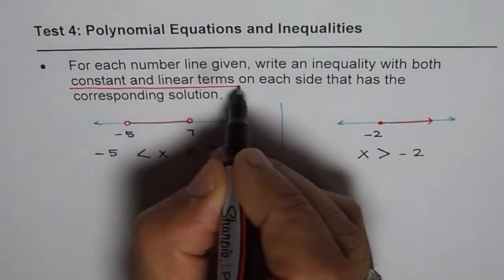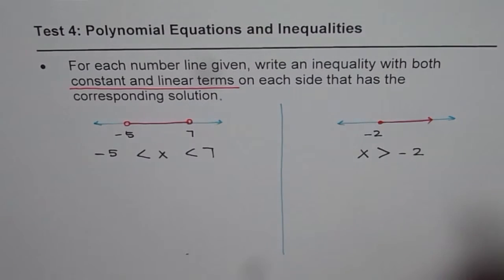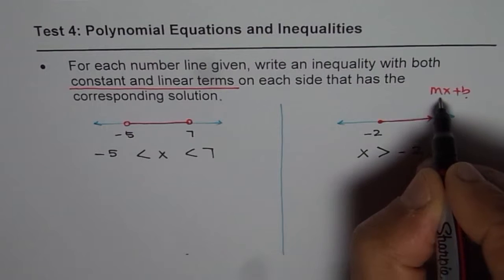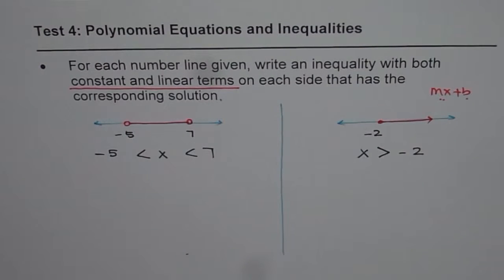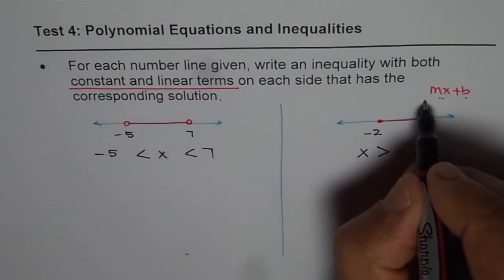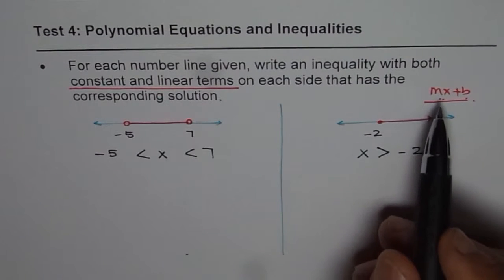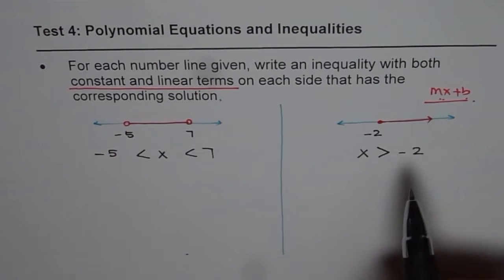That means kind of, you know, mx + b, right? So, that's a constant and this is a linear term. I hope you get the idea. Now, don't make a mistake of just putting a constant or just putting a linear term.